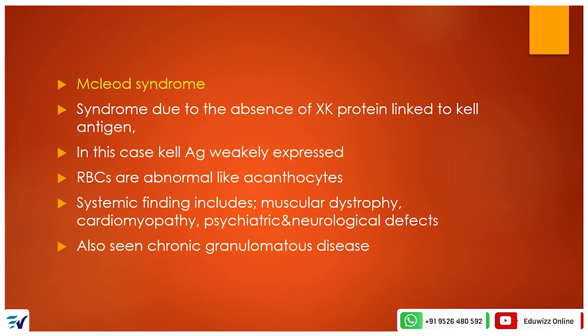McLeod syndrome is a condition where Kell antigens are only weakly expressed. In this syndrome, RBCs are abnormal — they appear as acanthocytes. The syndrome also includes systemic findings such as muscular dystrophy, cardiomyopathy, and psychiatric and neurological defects. McLeod syndrome is also associated with chronic granulomatous disease.